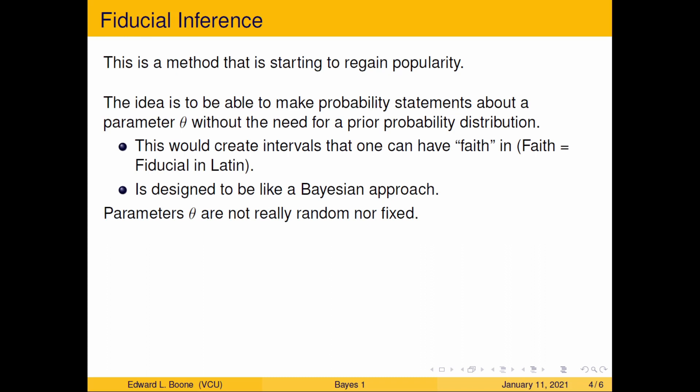Fiducial inference is a method that is starting to gain some popularity. It fell out for a while, and the reason is that the idea was to do something like Bayesian statistics but without having to specify a prior probability distribution. If you don't set up the substitute distribution just right, you don't end up with a real probability distribution at the end — which is the whole point of doing a Bayesian analysis. They produce intervals called fiducial intervals; 'fiducial' means 'faith' in Latin. So it's an interval you could have faith in versus confidence in. The parameters theta are really neither random nor fixed, because there's not always a probability distribution that goes along with them in the way there is in a Bayesian approach.